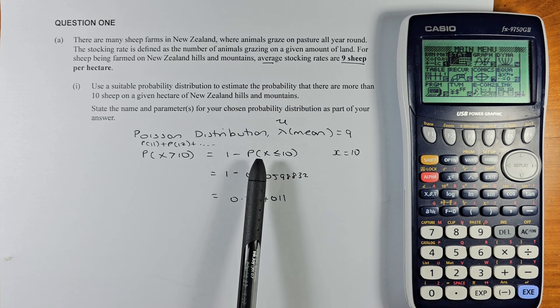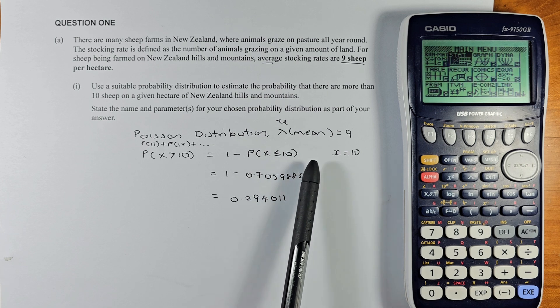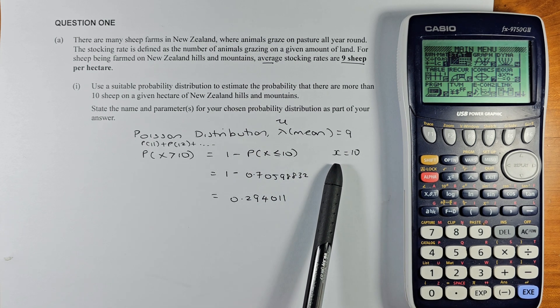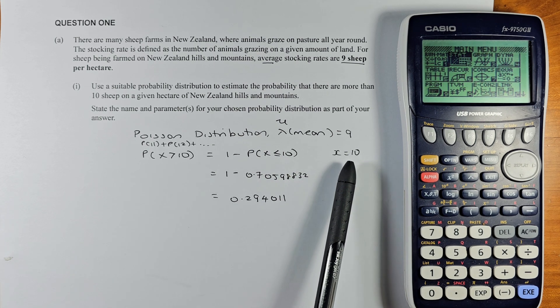It means that you're going to calculate probability of 0, 1, 2, 3, 4, 5, up to 10. Your x accumulates from 0 to 10, so that's why your x equals 10.